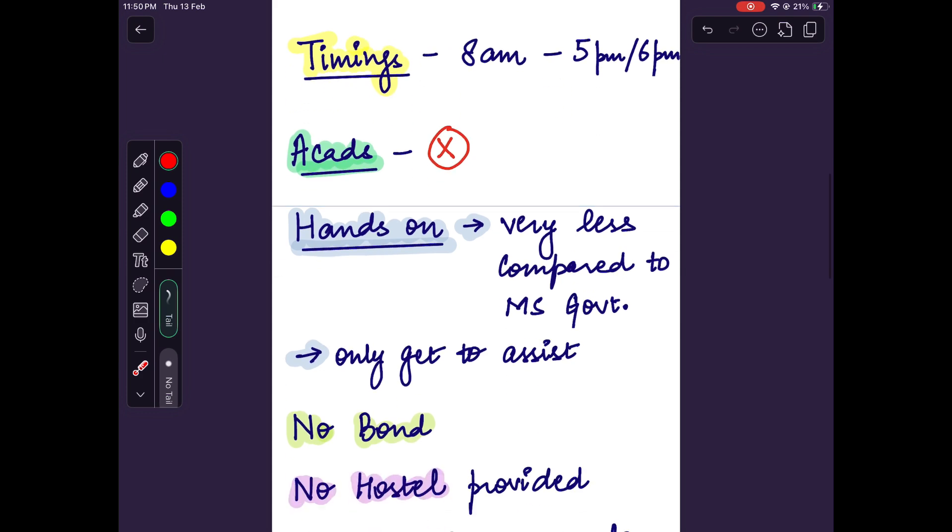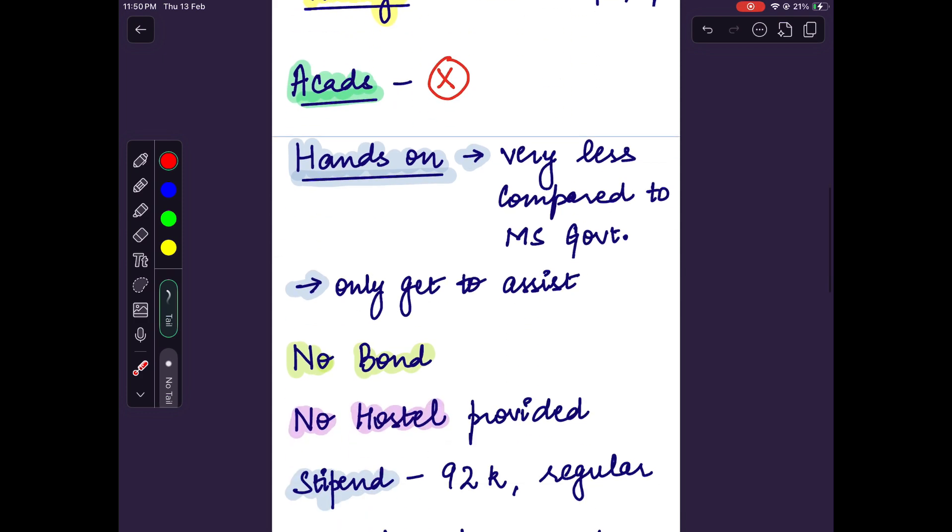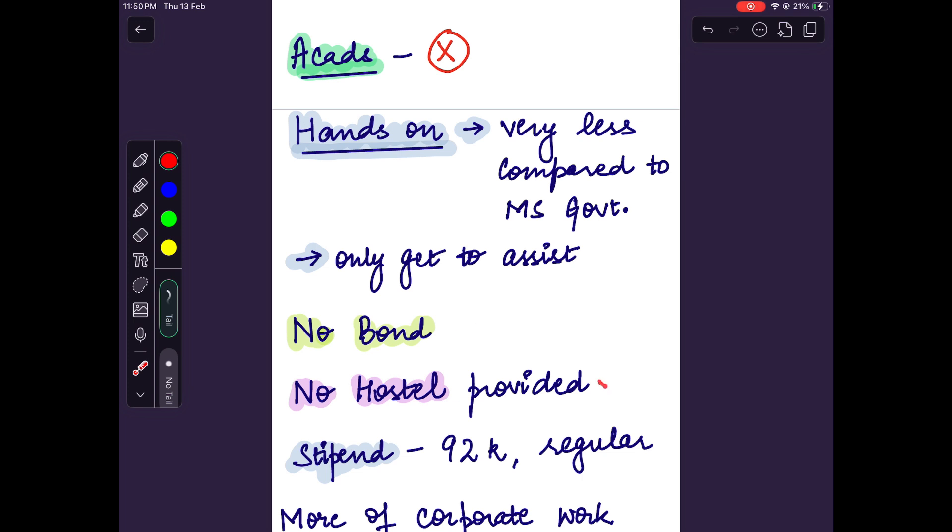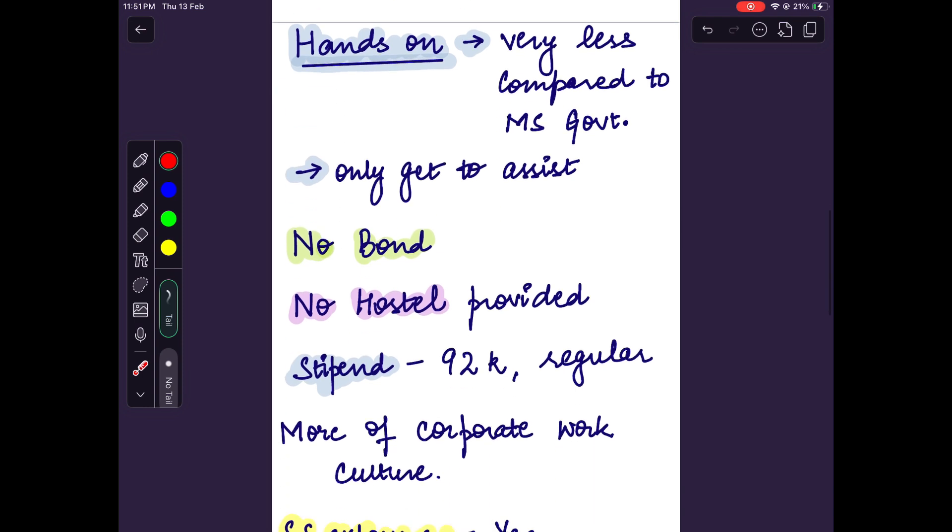There is no bond here. Hostel accommodation is not provided, but it is located in Connaught Place in Delhi, so flats are quite easy to find nearby. The stipend here is good - it is 92,000 and it comes regularly every month.